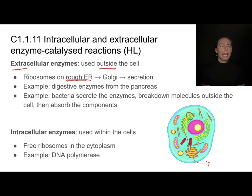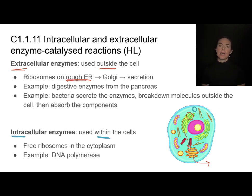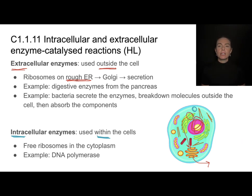In contrast, intracellular enzymes are used within the cell. If an enzyme is for use within the cell, it's produced on one of the free-floating ribosomes in the cytoplasm — there's no need to secrete them. A great example is DNA polymerase, an enzyme needed in the nucleus during DNA replication, so it's made by free-floating ribosomes, not rough ER ribosomes.